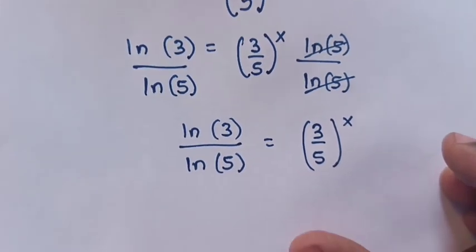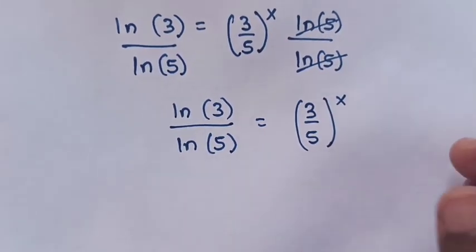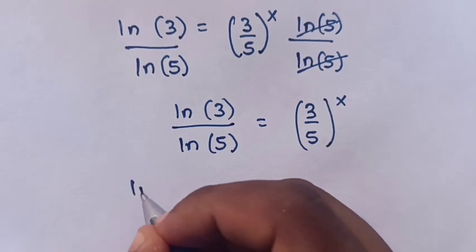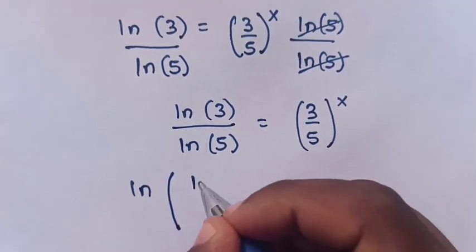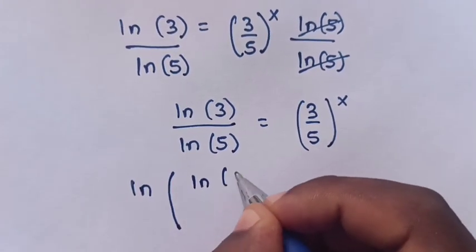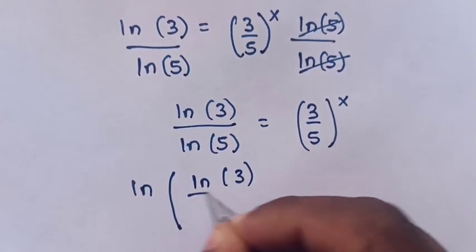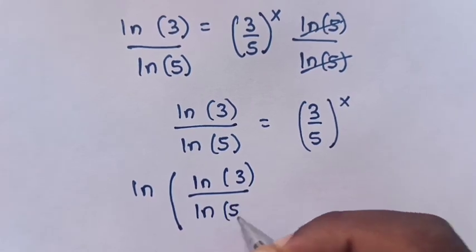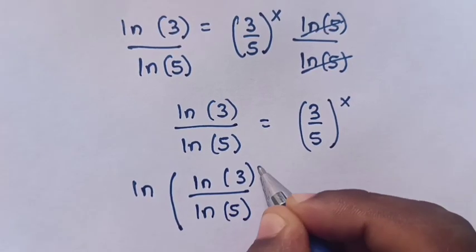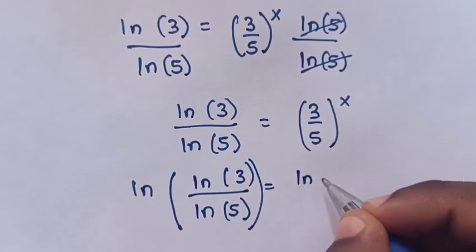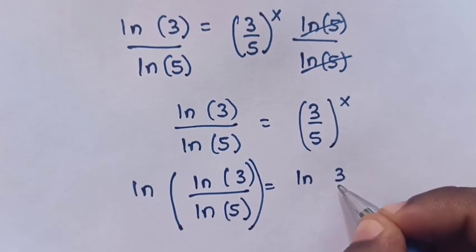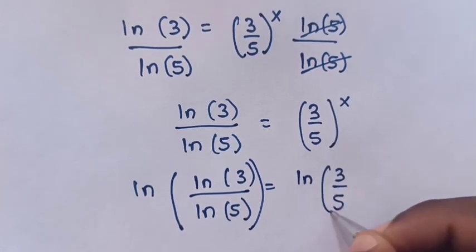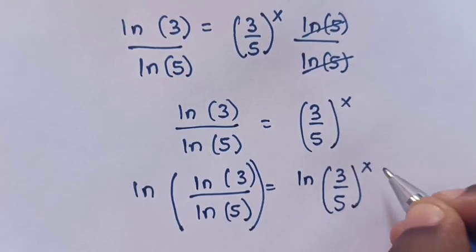So then our equation will be log(3) / log(5) is equal to log(3/5)^x, applying the log quotient rule.